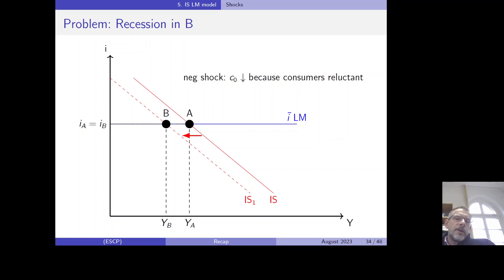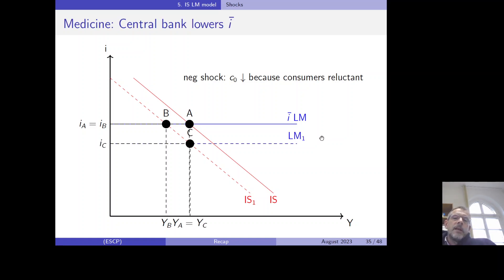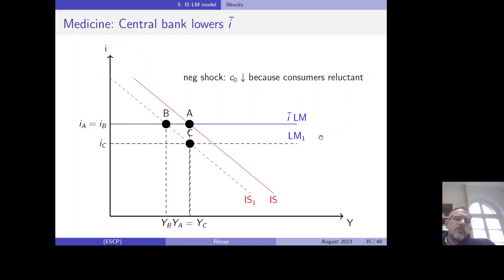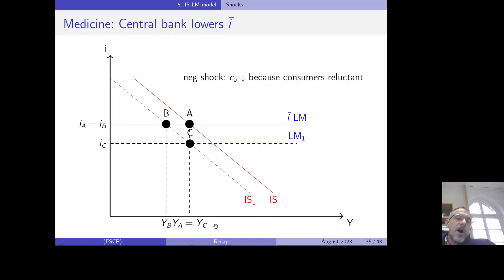With higher unemployment, the government could use expansionary fiscal policy, but here we assume the central bank reacts instead by implementing an expansionary monetary policy — lowering the interest rate. Given the right size of the interest rate cut, the central bank uses exactly the right dose of medicine to cure the problem, and GDP returns to the same level at point C as it was at point A.